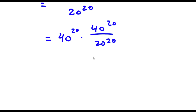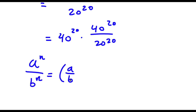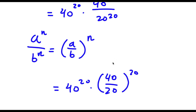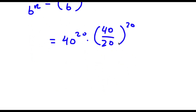Now if I have something in the form a to the power of n over b to the power of n, this equals (a over b) to the power of n. So I have 40 to the power of 20 over 20 to the power of 20, which I can rewrite as (40 over 20) to the power of 20. Now 40 over 20 is simply equal to 2, so now I have 40 to the power of 20 times 2 to the power of 20.